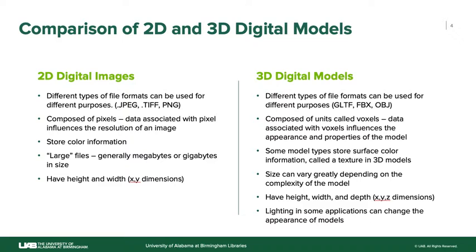Just as there are certain file types with best uses for different applications in 2D digital images, you'll also see that there are best uses for certain file types in 3D digital models. The different types of files for 3D digital models can include the FBX file type, the GLTF or GLB file type, and if you're familiar with 3D printing, you may have worked with the OBJ or the STL file type. Different types of files are best for 3D printing, virtual reality, or web display.